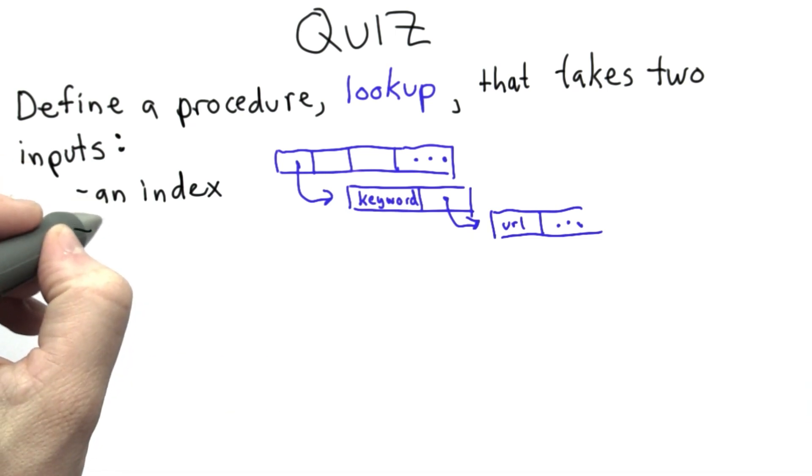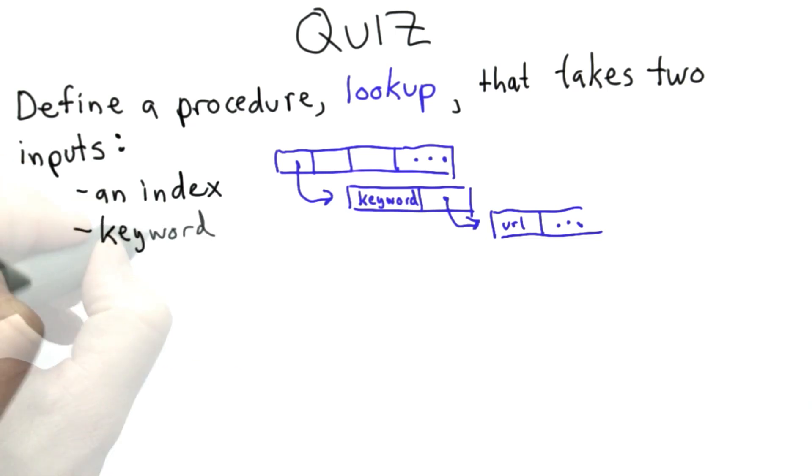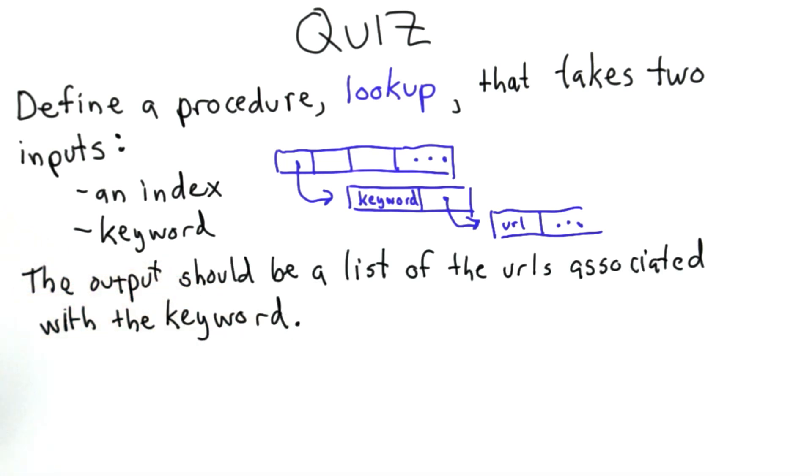The second input is the keyword to look up. That's what we're searching for. The output of lookup should be a list of all the URLs associated with the input keyword.